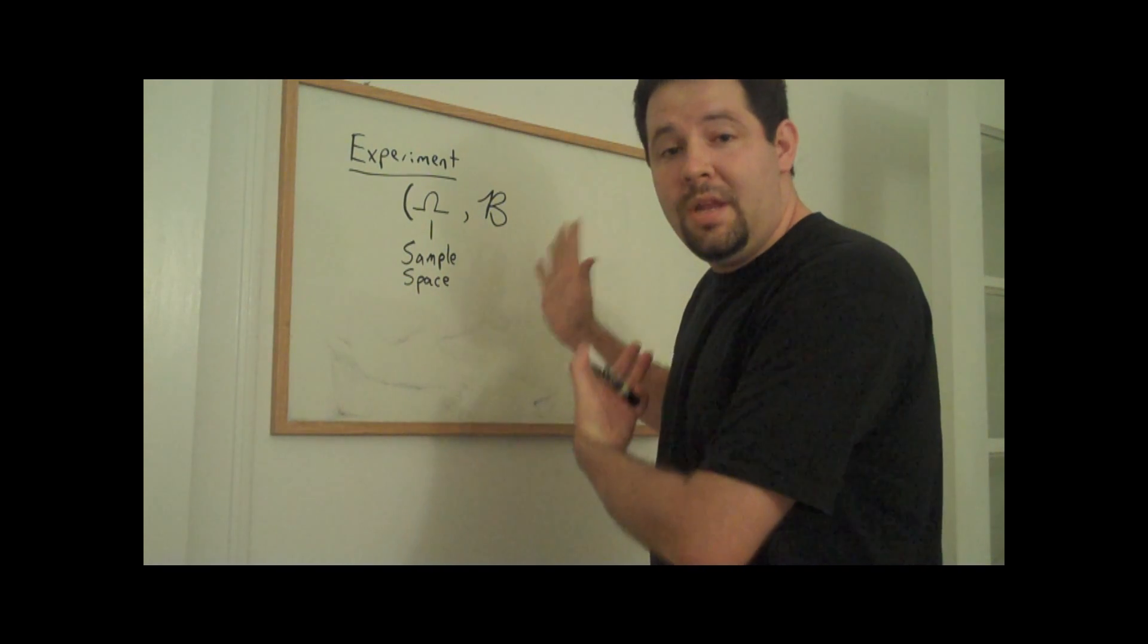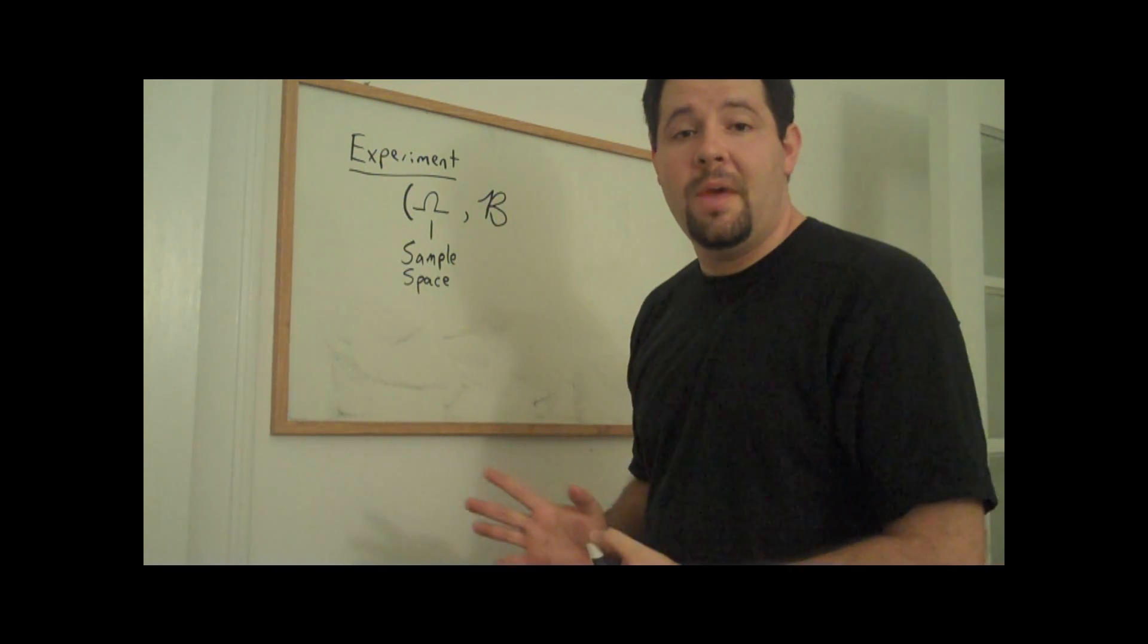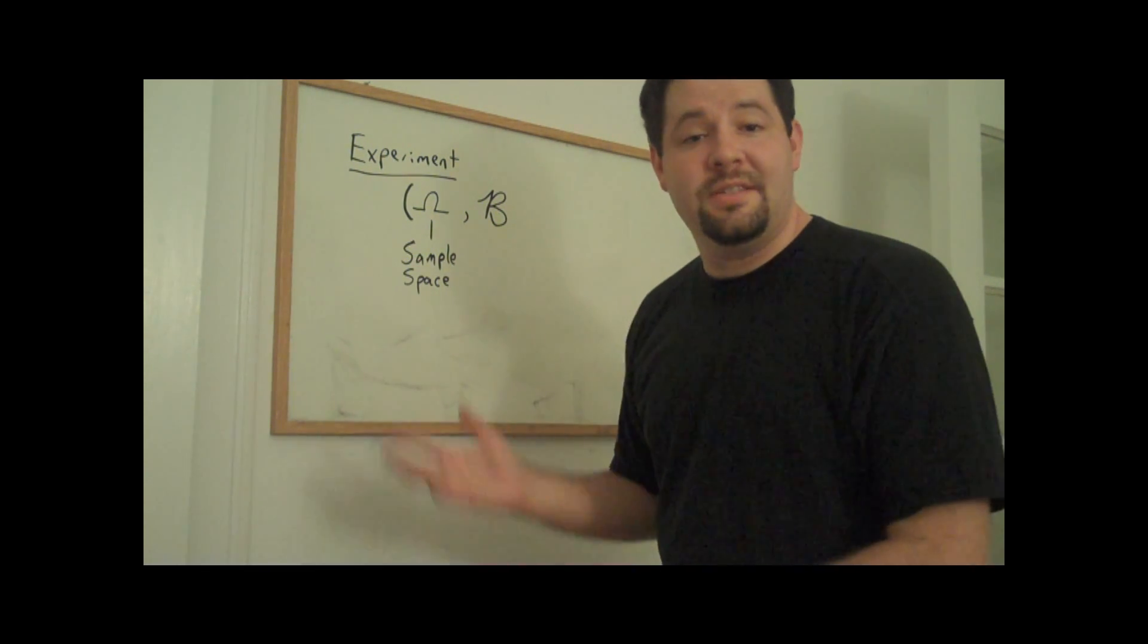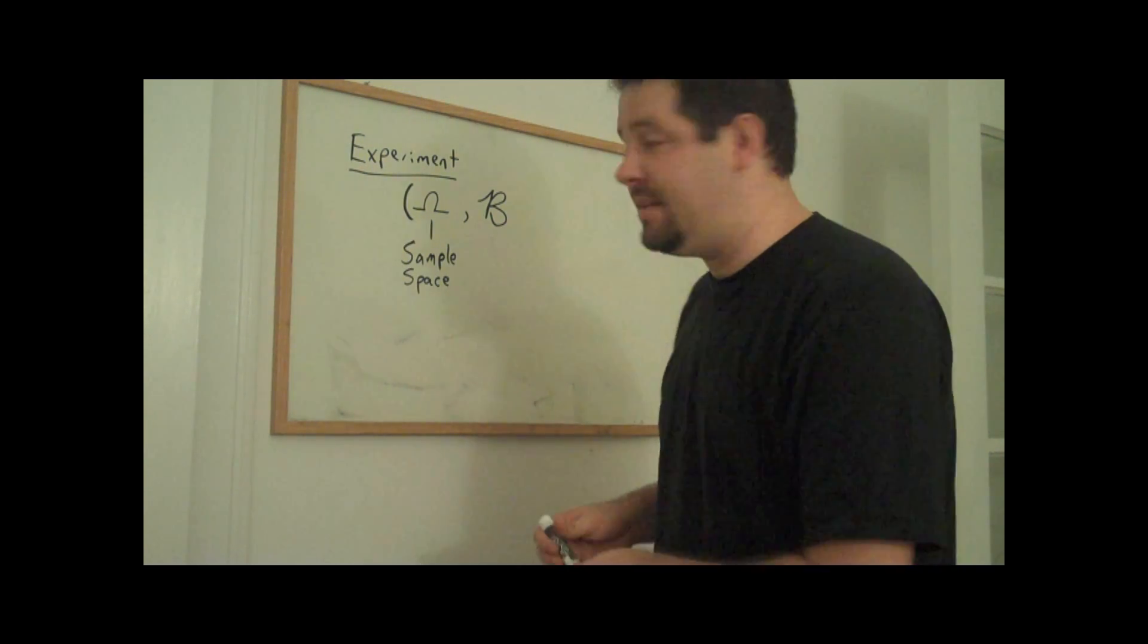We'll think of this set B as the collection of subsets of Omega, the collection of subsets of the sample space, what we're going to call the set of events, or the Borel sets.